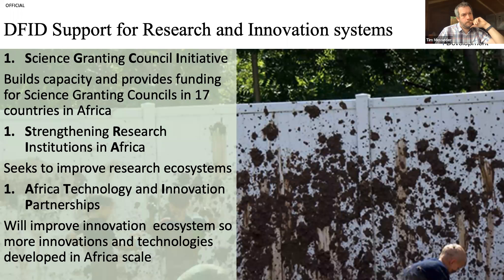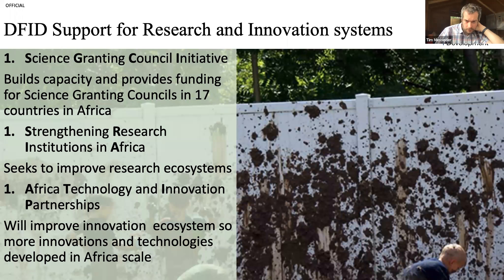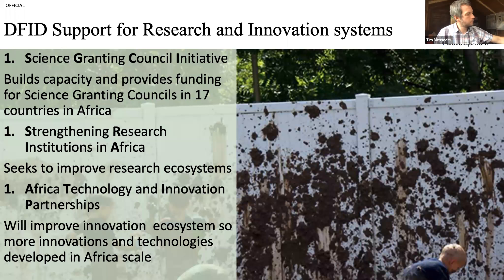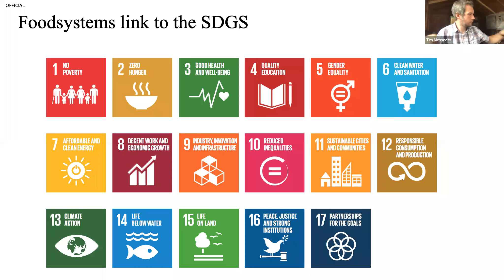We do that through three programs. The first is the Science Granting Councils Initiative, which provides match funding and builds capacity for research councils in African countries. We also have a program called Strengthening Research Institutions in Africa, focused on the academic research ecosystem. Then there's the Africa Technology and Innovation Partnerships (ATIP), which looks to improve innovation ecosystems so more technologies developed in Africa come to scale — covering things like the finance environment, IP regulations, and the policy environment.